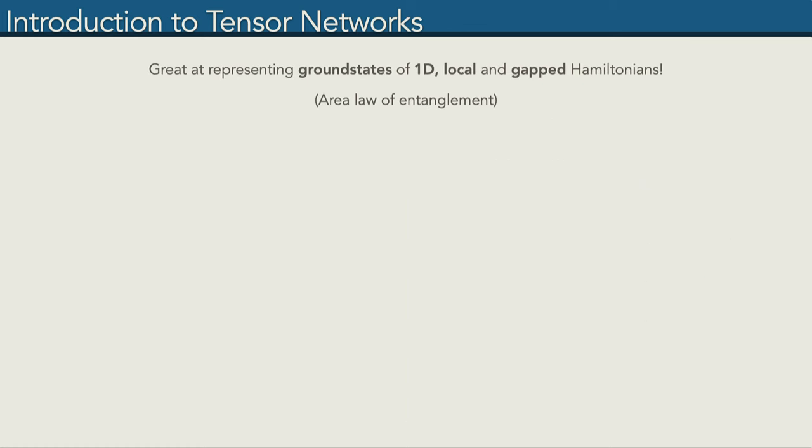These tensors are connected with a bond that has a certain dimension chi. This bond dimension chi is basically where the exponential complexity is hidden. In order to recover the full wave function, we would need to scale the bond dimension exponentially with system size. But the hope is that by cutting off chi at some finite value, we can reach a lot of physically interesting states. It turns out that chi is directly related to a physical quantity, namely the entanglement entropy. From that one can derive that for representing ground states of one-dimensional local and gapped Hamiltonians, Matrix Product States are extremely good due to these states having area law of entanglement.